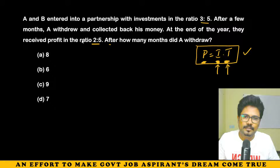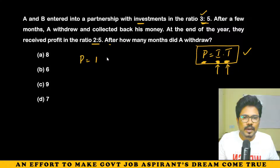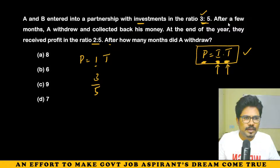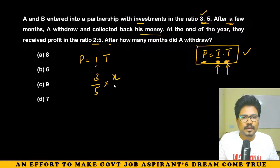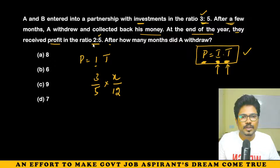P = I × T. Now, investments are in the ratio 3 is to 5. Suppose A invested for X months and withdrew. B stayed for the full 12 months. At the end of the year, the profit ratio is 2 is to 5. So we set up: 3×X divided by 5×12 equals 2 divided by 5.